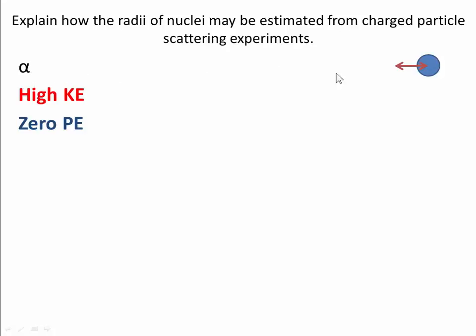As it approaches the nucleus it slows down which means the kinetic energy gets smaller and the electrostatic potential energy increases. So when it's at the point of closest approach the kinetic energy will be zero, the potential energy will be a maximum.